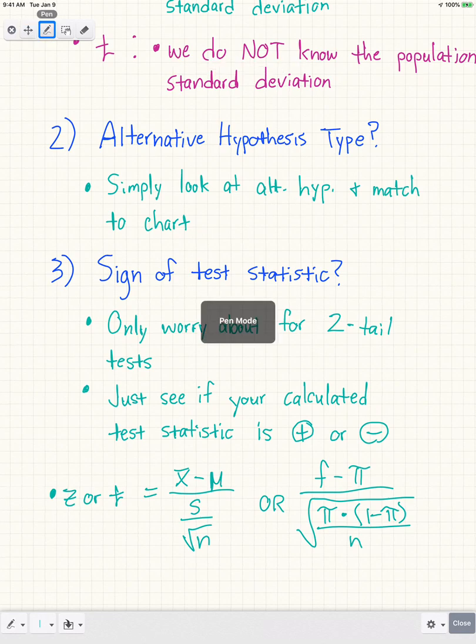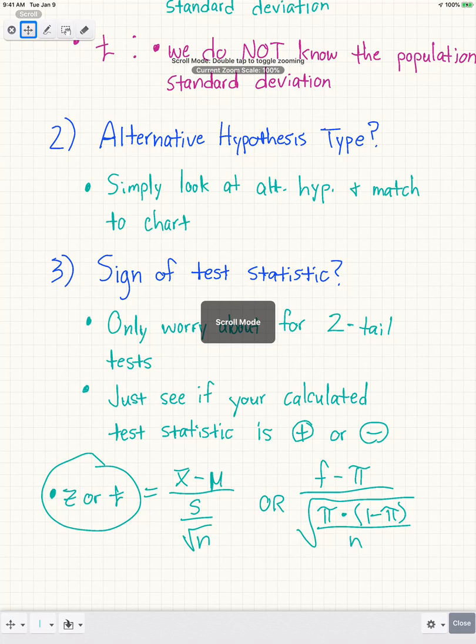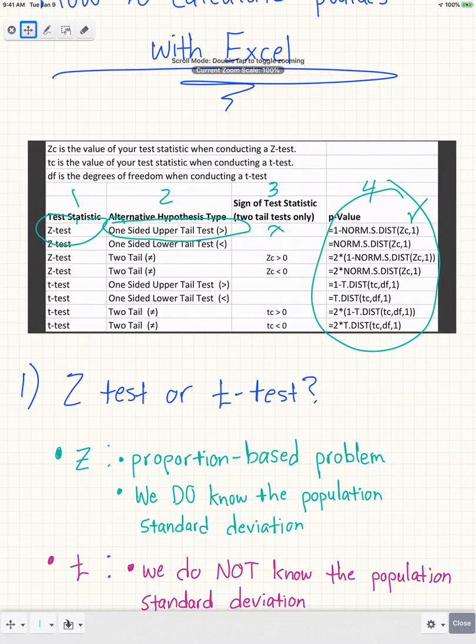Your Z or T value from this section is what you plug in. If you're dealing with the T value instead, you plug in tc.